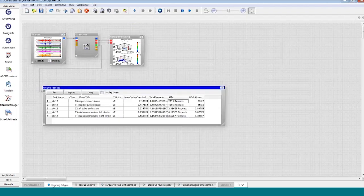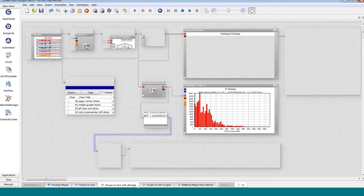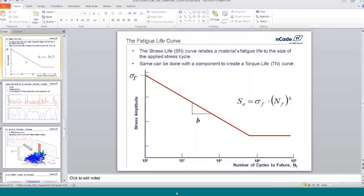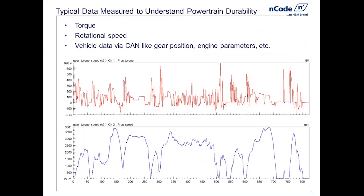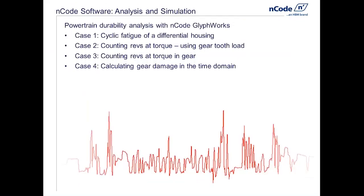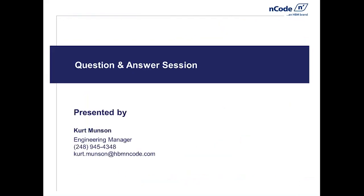All the answers we need are given in this process. We could also use similar types of processing per gear and for all gears combined, looking at total damage using the traditional stress life method. So to summarize: we talked about using revs, torque, and speed to understand durability. We looked at the classic rain flow-based non-rotating cycle counting algorithm, followed by three cases that took torque at revs into account — looking at the per-rev cycle counting concept — which is critically important for rotating machinery.